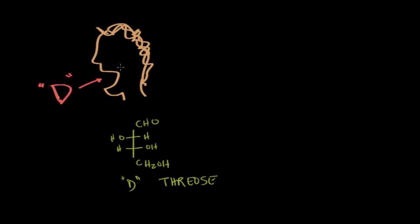It turns out that there are actually two chiral centers here. Whenever we have n chiral centers, we have two to the n possible stereoisomers. In this case there are two chiral centers, so we have four possible stereoisomers. This particular stereoisomer actually has an overall optical activity such that it rotates plane-polarized light counterclockwise, as opposed to clockwise like you would see with most R configurations.